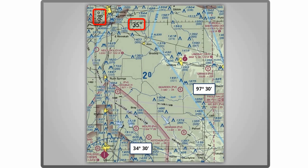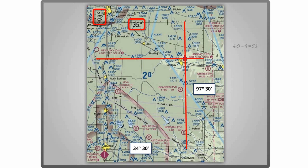With the four bordering lines identified, all that's left is to draw a lat and a long right over the airport. To figure the latitude, count down the tick marks from the 35 degree line — this looks to be very close to 9 minutes. Subtract 9 from 60, and we end up with 34 degrees, 51 minutes north for the latitude. Doing the same counting for the longitude, we're right about 5 minutes from the 97 degree, 30 minute line. Add 5 to 30, and we get 97 degrees, 35 minutes west.